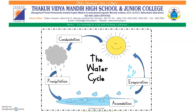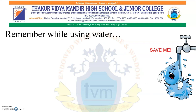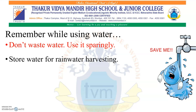Man also digs wells and bore wells to lift the ground water. Due to uncontrolled use of water for an increasing population, industry and farming, it is now in short supply. Water scarcity has become a serious problem. We shall remember the following things while using water: don't waste water, use it sparingly and judicially, and store water for rain water harvesting.